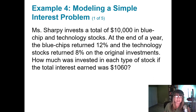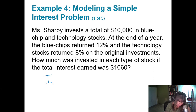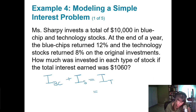Ms. Sharpie invests a total of $10,000 in blue chip and technology stocks. At the end of the year, blue chip stocks returned 12% and technology stocks returned 8% on the original investment. How much was invested in each type of stock if her total interest is $1,060? I like to draw a table and fill in all the blanks, but we need to understand this involves two different types of interest.